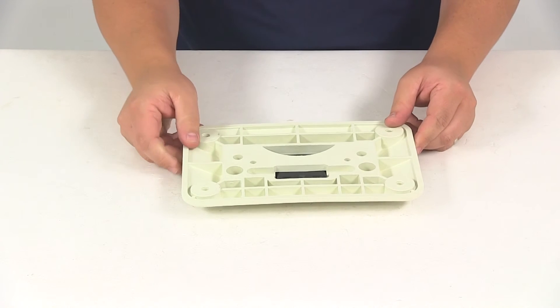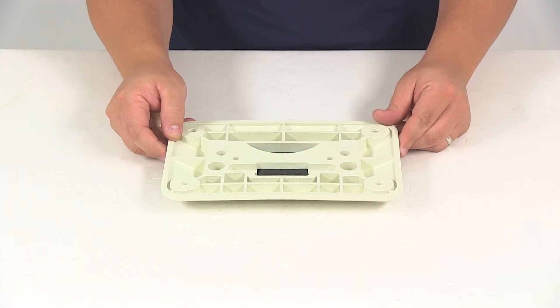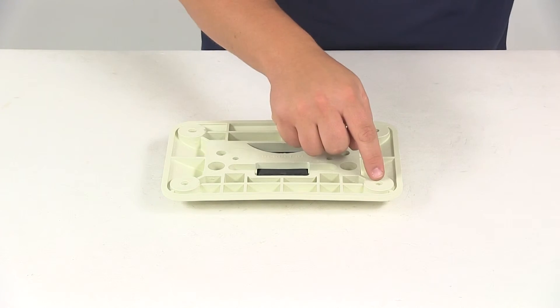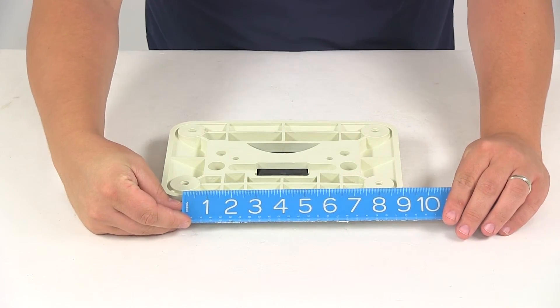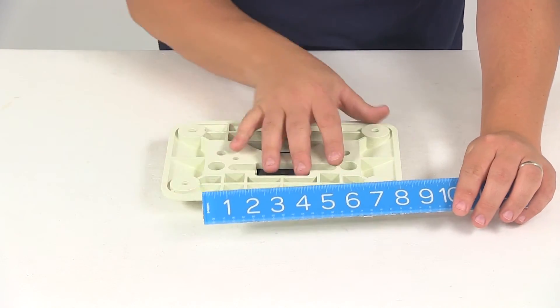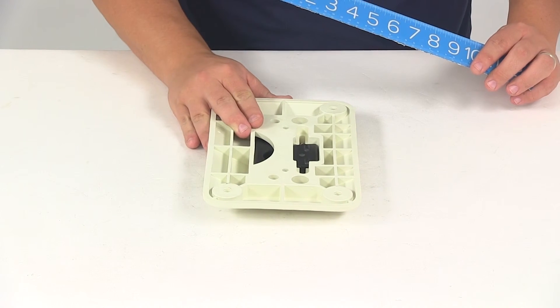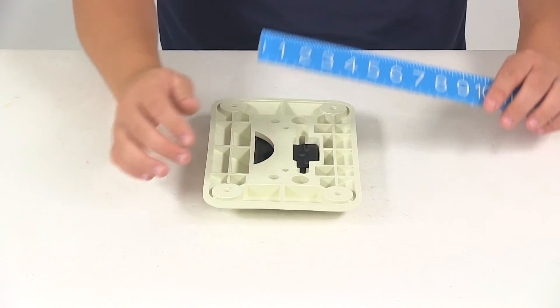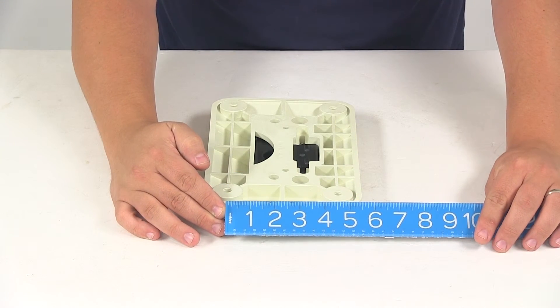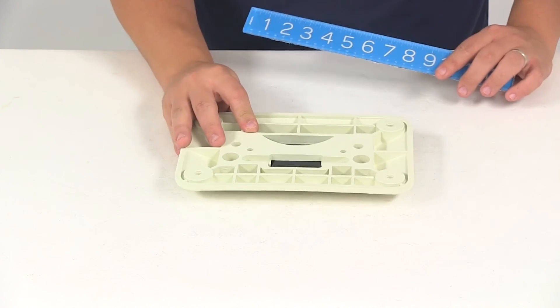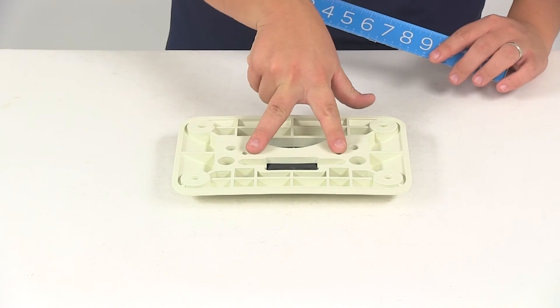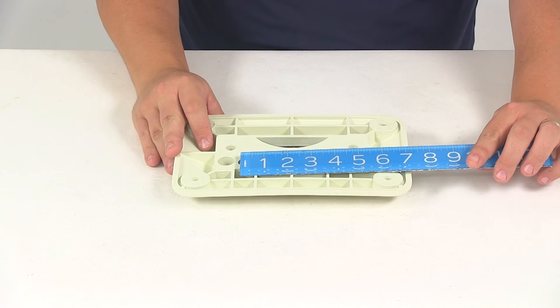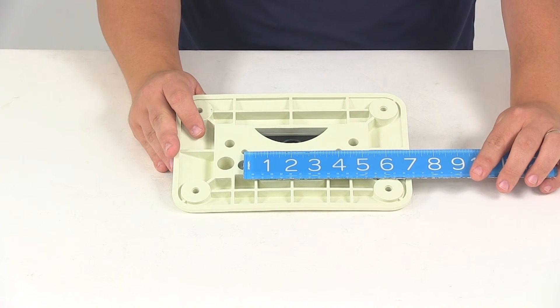We're going to take a measurement of the mount hole separation that we have. So from this mounting hole to this mounting hole on center, that's going to give us a measurement of eight inches. The distance between these two mounting holes on center is going to measure four and a half inches, and then the distance between these two mounting holes on center is going to measure right at four inches.